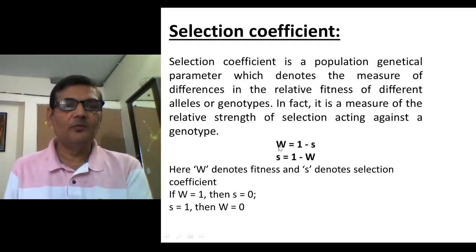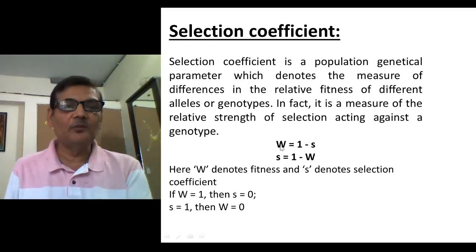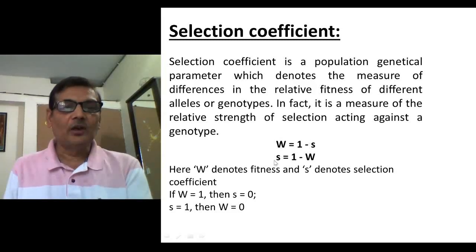Here, W which denotes fitness is equal to 1 minus S, where S stands for selection coefficient. W indicates the fitness of specific genotypes or alleles, and S indicates the deleterious nature or deleterious effect of a particular genotype or alleles. The equation is W = 1 - S, or equivalently S = 1 - W.